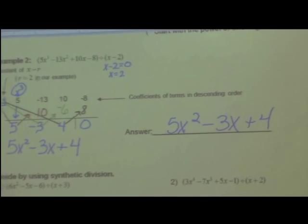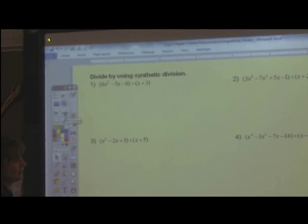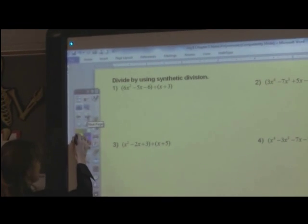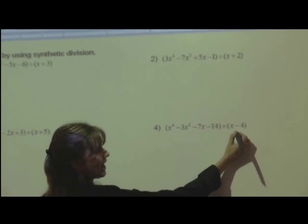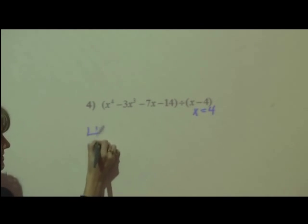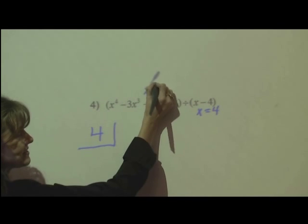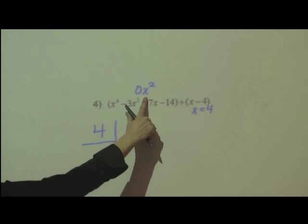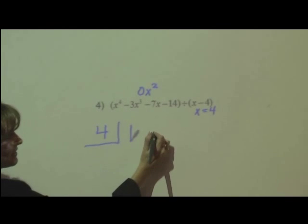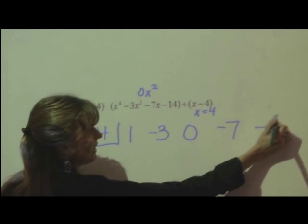Now order does matter. And you have to make sure that you put placeholders in. That's probably the one thing that's a little bit hard to remember to do. So as I look at these, let's just set a couple of these up. Let's look at number four. I know that my x value that I'm using is going to be four. Four is the number that goes in the little box. I look at the leading coefficients of all my terms. I notice that I am missing an x squared. So I have to be careful to put a placeholder here. The coefficients are 1, negative 3, 0, negative 7, and negative 14.